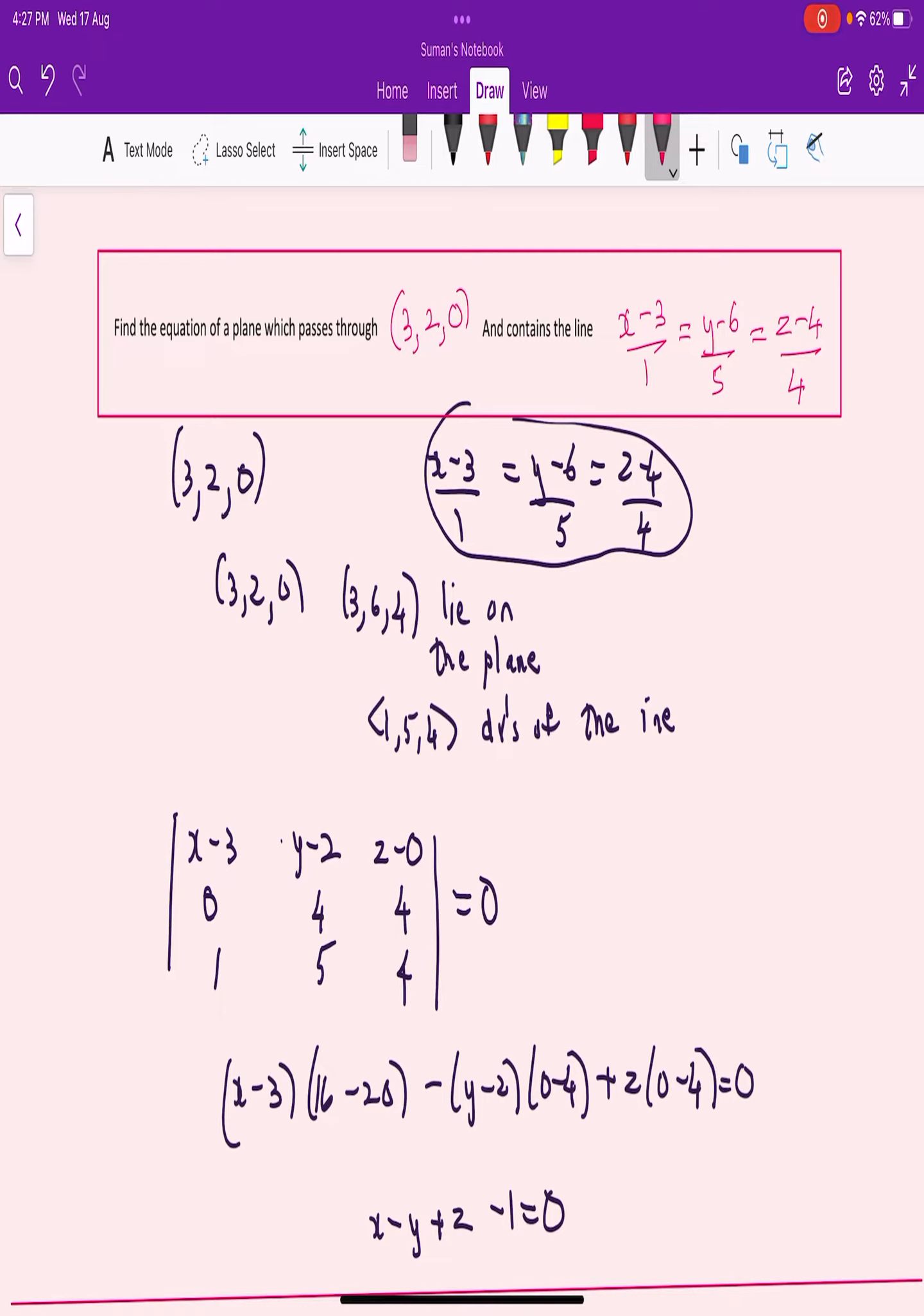So equation of a plane which passes through two points and having direction ratios of the normal is given by this formula: (x-x1), (y-y1), (z-z1), (x2-x1), (y2-y1), (z2-z1), and the direction ratios of the normal as A, B, C.